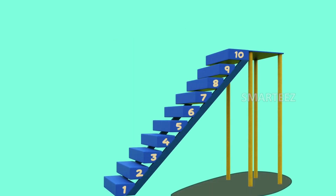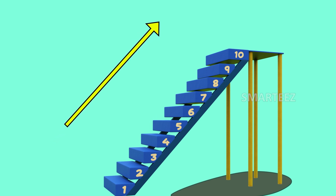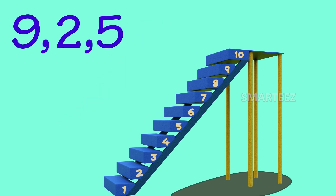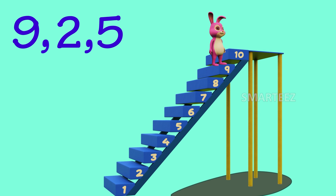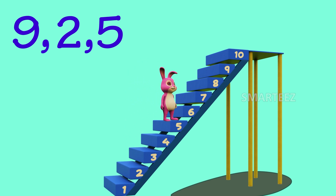As we have seen, ascending order is going up in value. Are these numbers in ascending order? Let's see our bunny hops. Well, you can see that there was a jump down from 9 to 2 before a jump up.